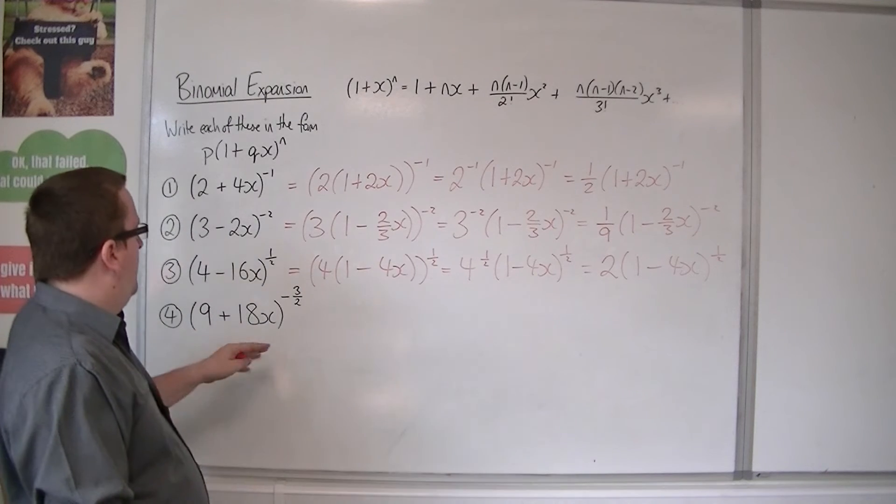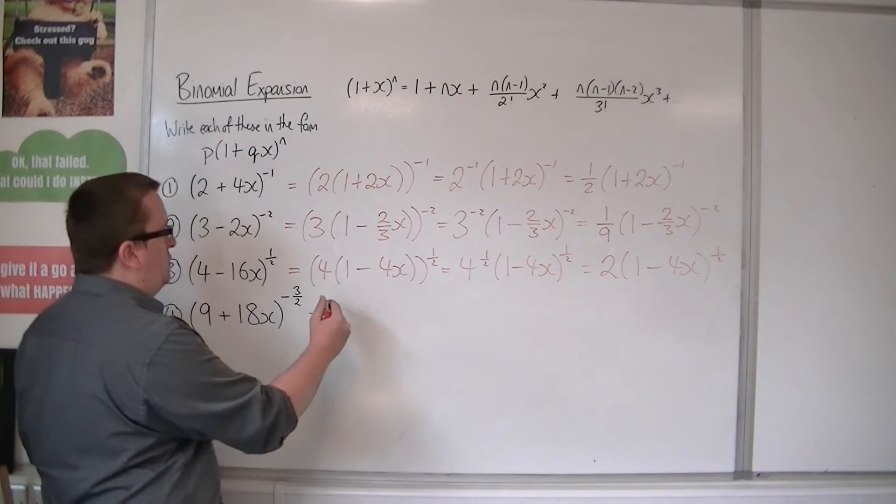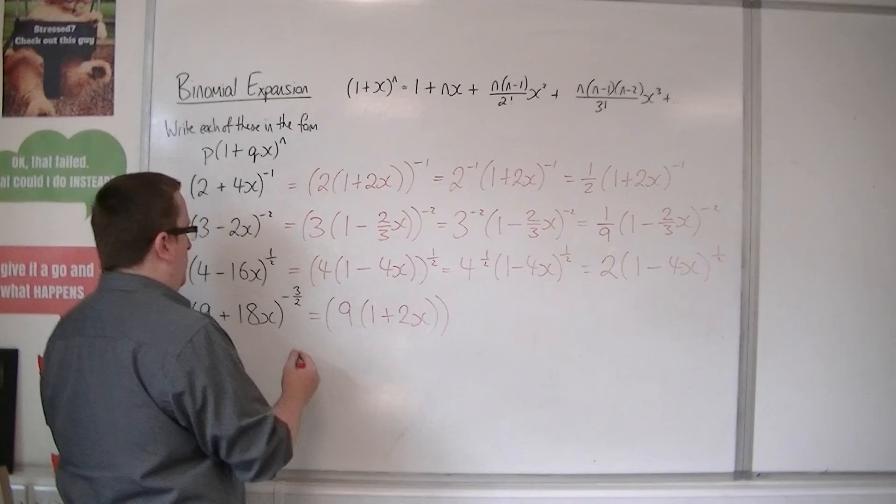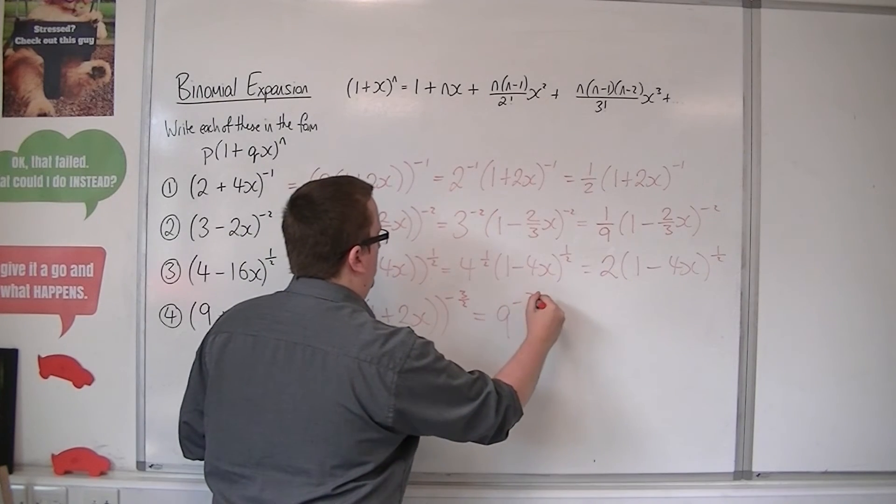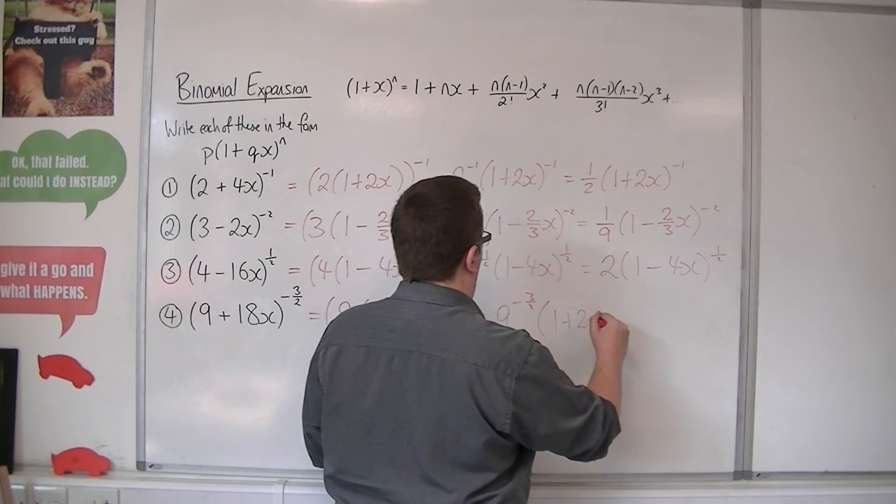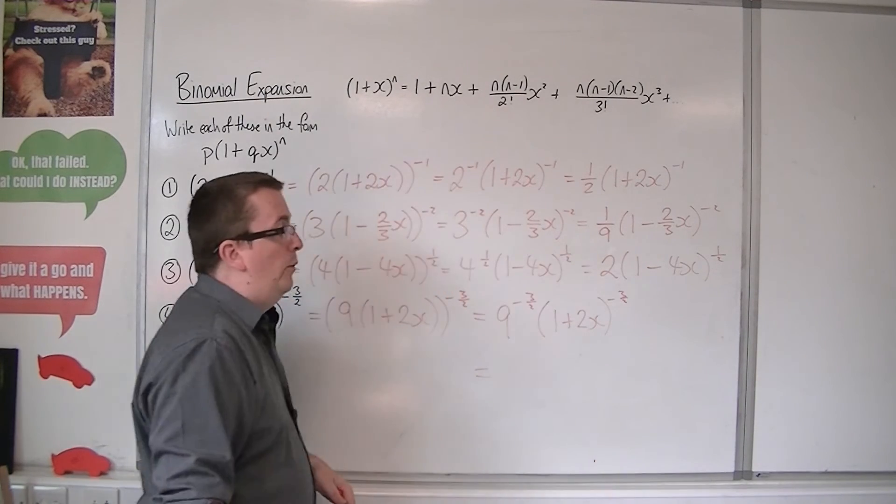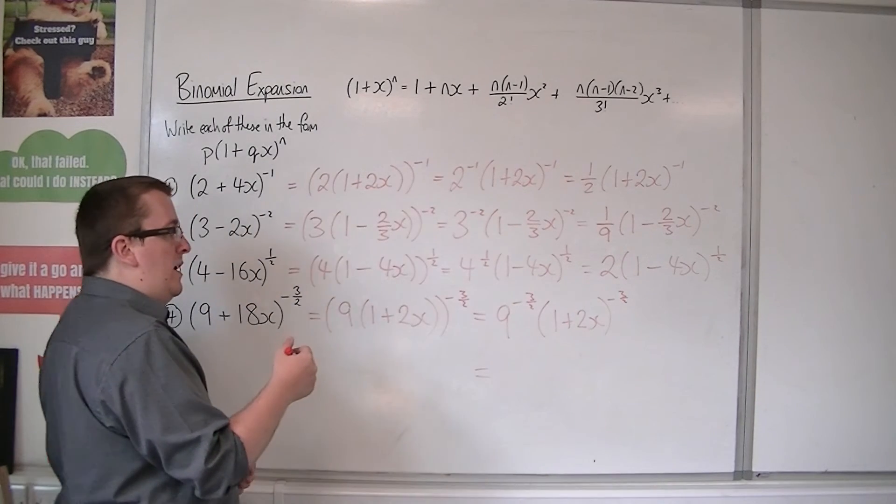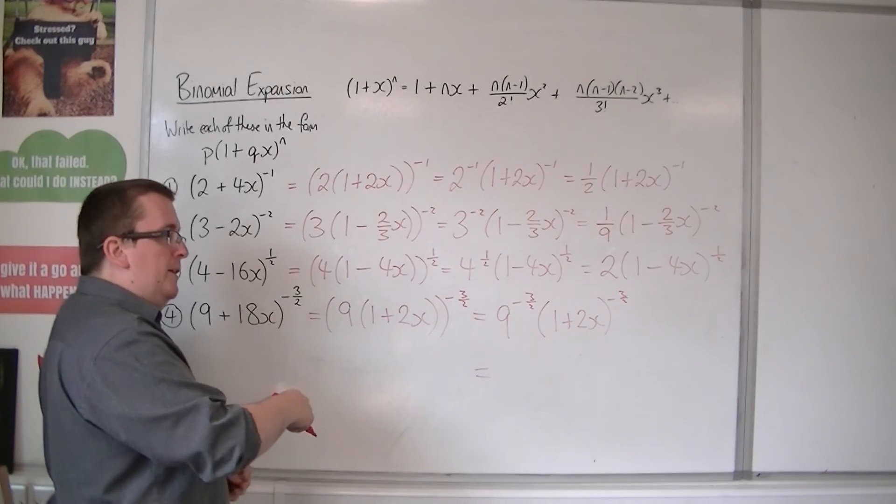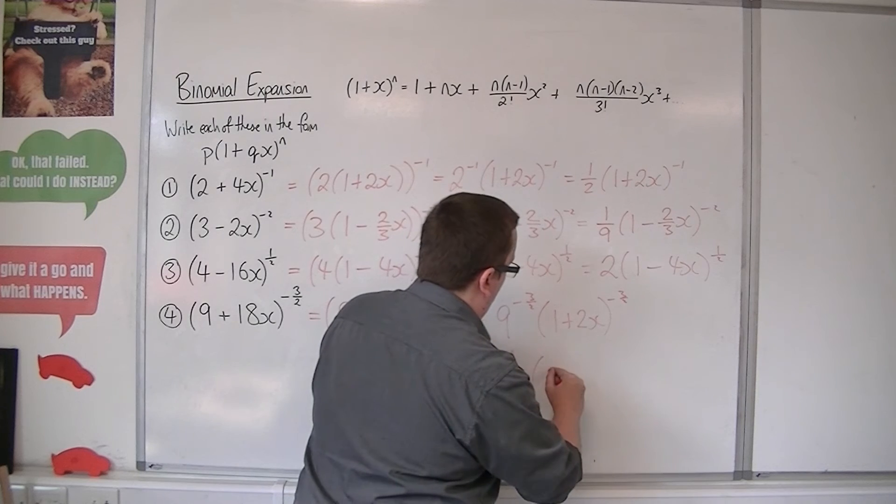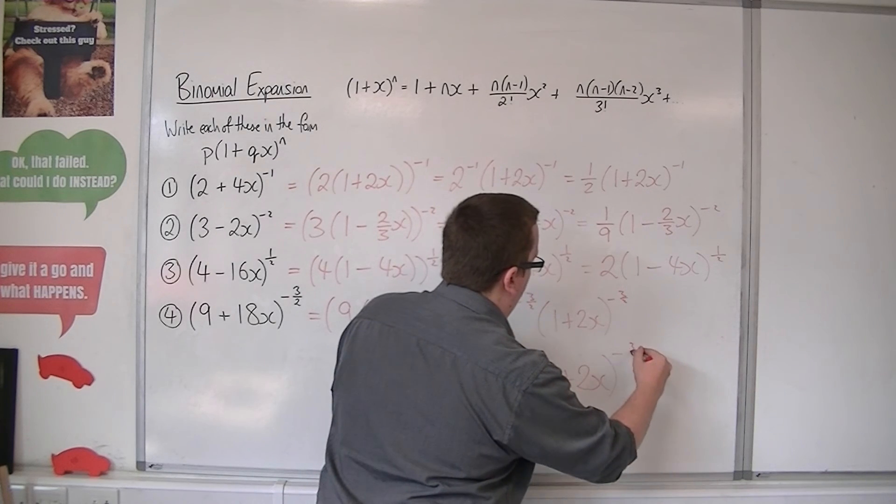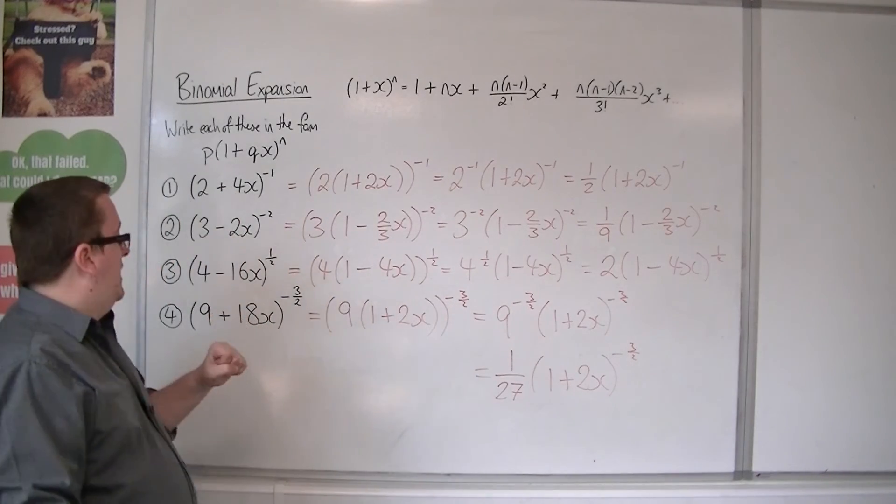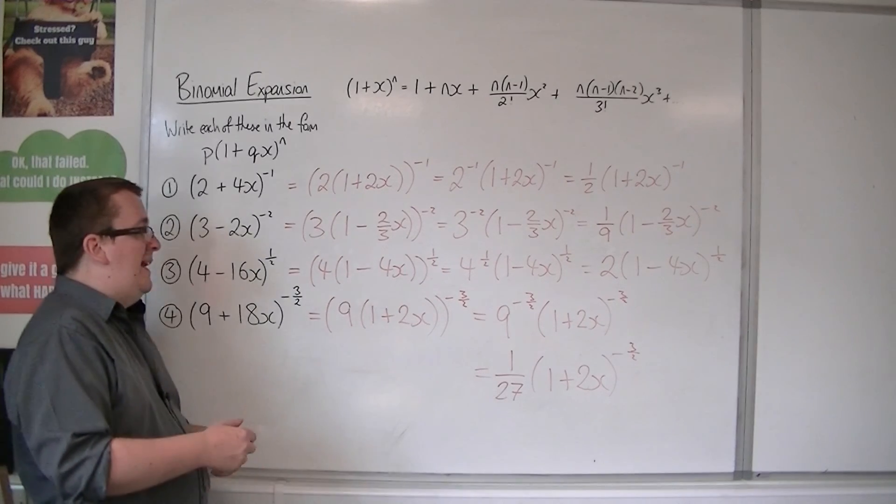So one last one to finish off with, 9 plus 18x to the minus 3 halves. So factor the 9 out of those two terms within the bracket. So we're going to have 9 lots of 1 plus 2x, all to the power of minus 3 halves. So that's 9 to the minus 3 halves, times 1 plus 2x to the minus 3 halves. Now what's 9 to the minus 3 halves? So that's 1 over 9 to the 3 halves. So 9 square root of that is 3, so it'd be 27. So 1 over 27. 1 plus 2x to the minus 3 halves. So figure out what 1 plus 2x to the minus 3 halves is, and multiply it all by 1 over 27, and that will give me the binomial expansion of 9 plus 18x to the minus 3 halves.